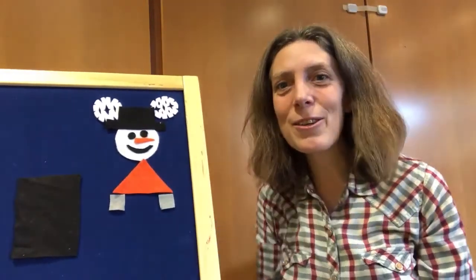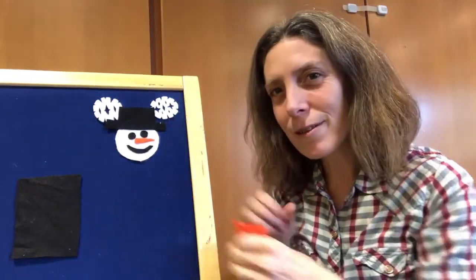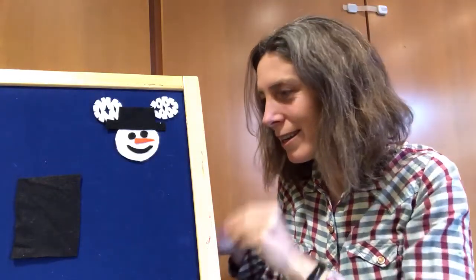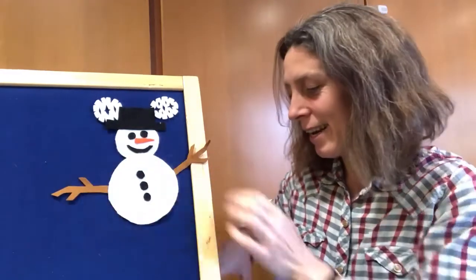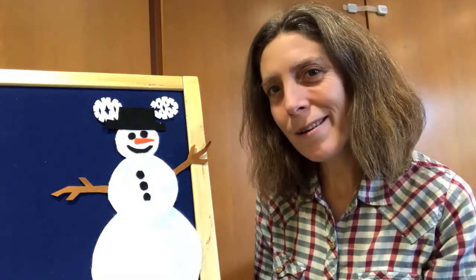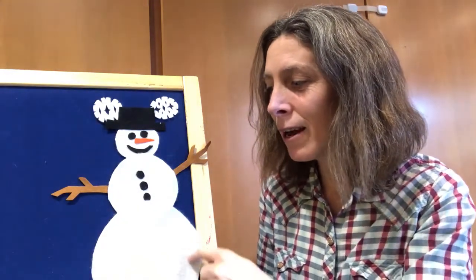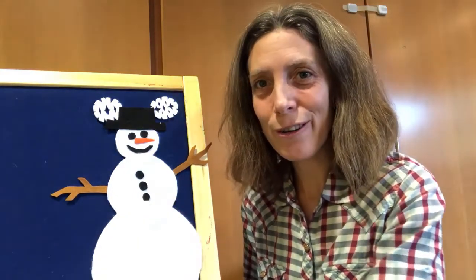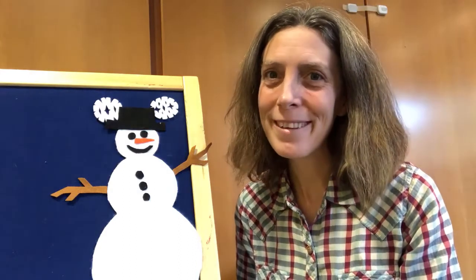Today's felt story is called Snowman, Snowman, What Do You See? Our snowman friend sees some shapes along the way and we're going to talk about what colors and shapes they are. How many circles does a snowman need? Usually we have one, two, three. What shape is a snowball? It's round and round — it's a circle. Three white circles make up our snowman today. There's a lot of repetition in this story if you'd like to join in.